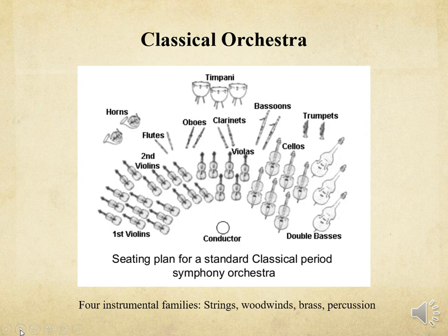In this seating plan for a standard classical period symphony orchestra, you'll notice that we've established the four instrumental families: string, woodwinds, brass, and percussion. The string section has expanded, and while we still have the flutes, oboes, clarinets, and bassoons, we've added trumpets and French horns. The timpani is still the only percussion instrument in the orchestra. You'll notice there's a conductor now instead of a harpsichordist, and that can also be a pianist conductor or a conductor with a piano soloist.